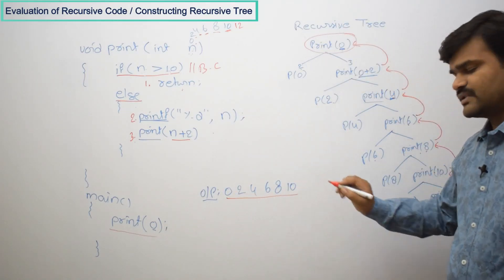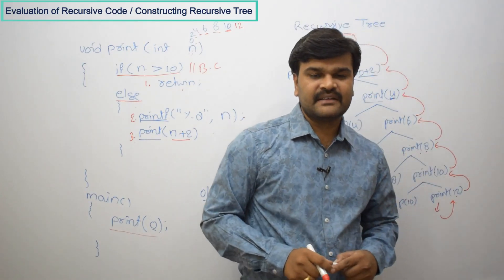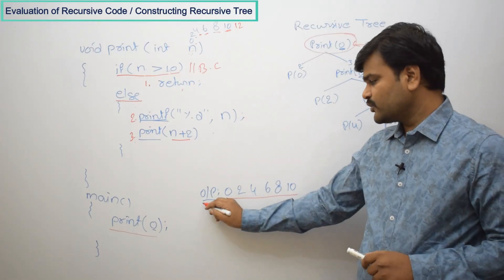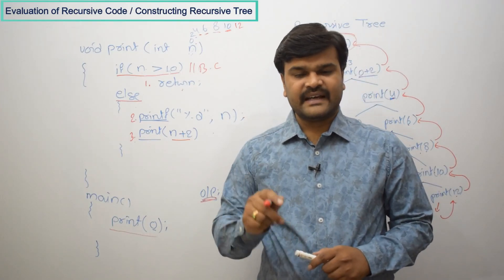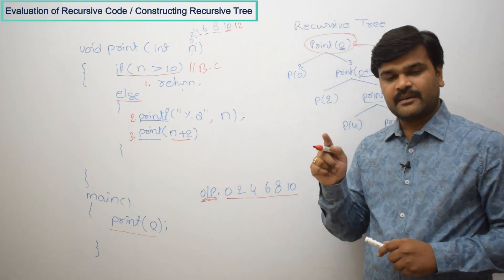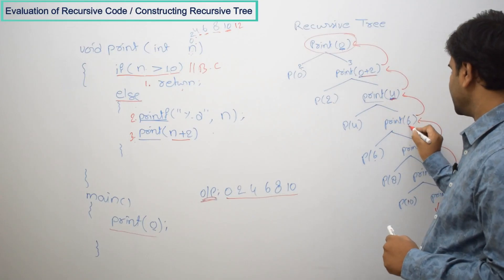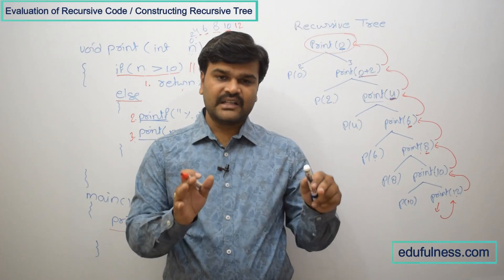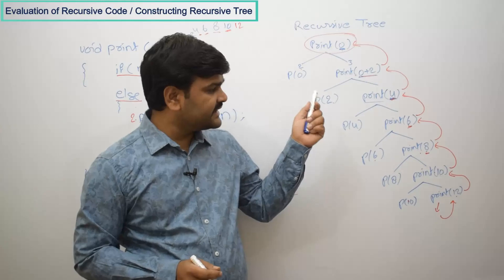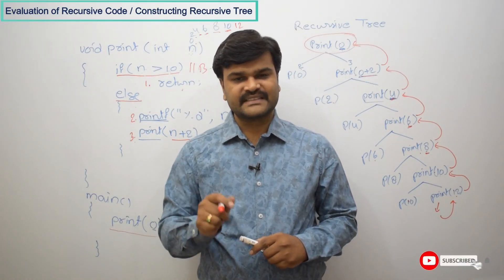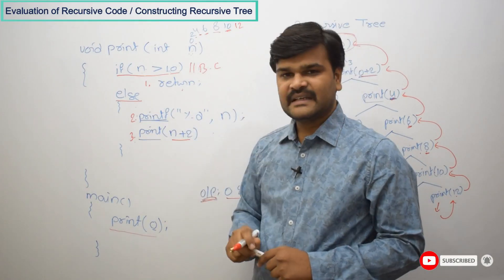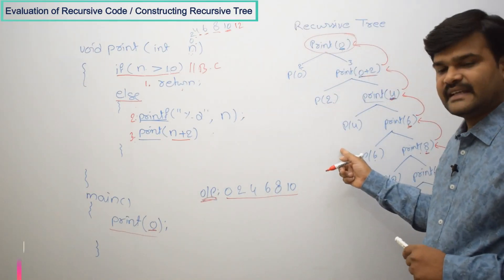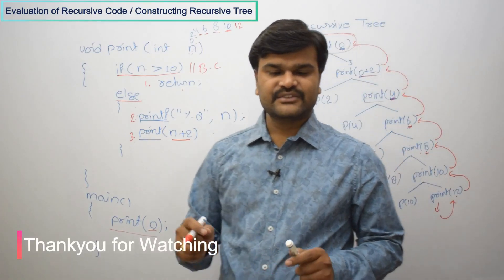By that time, the output is 0, 2, 4, 6, 8, 10. This recursive tree is very important when you want to find time complexity, and for complex recursive functions it gives you the exact answer without confusion. The main challenge in recursion is knowing the current values — the recursive tree gives you clarity about what the current parameters are. To solve any recursive function easily: first assign statement numbers, understand when each executes, then start constructing the recursive tree with the initial input.